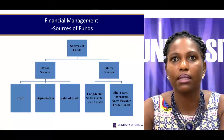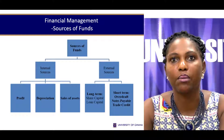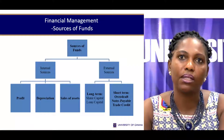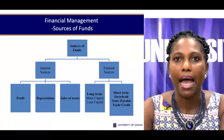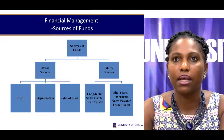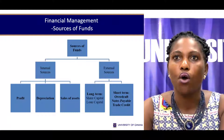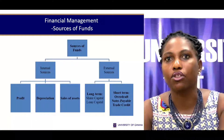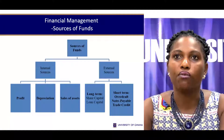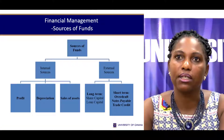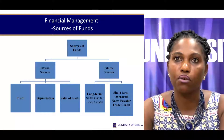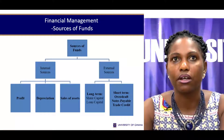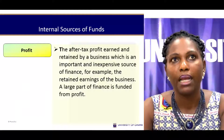When it comes to external sources, we can categorize them into long-term and short-term. In terms of long-term, we are looking at equity capital and debt capital, which can come in many forms. For the shorter term, we can look at overdraft facilities, notes payable, and suppliers' credit, which is also referred to as trade credit.